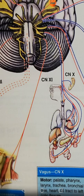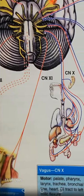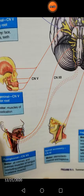The eleventh cranial nerve — the spinal accessory — goes towards your neck muscles. The sternocleidomastoid muscle and trapezius are the territory of this nerve. When it is injured, you expect weakness in turning the chin to the opposite side and the shoulder droops.